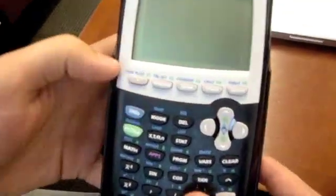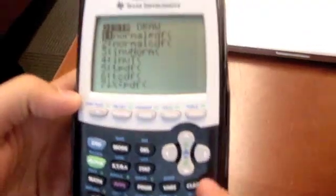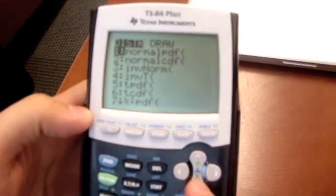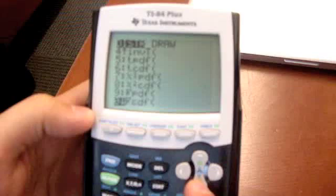Choose the second button and click VARS. It opens up a list of distributions. Scroll down until you reach the binomial distribution.